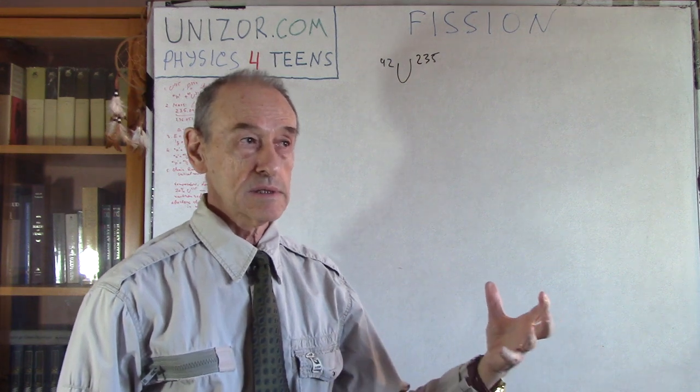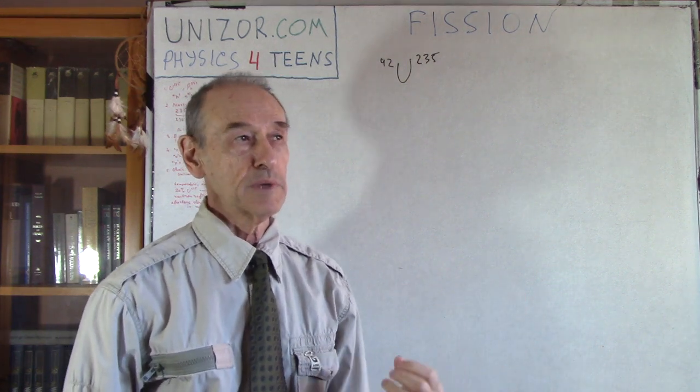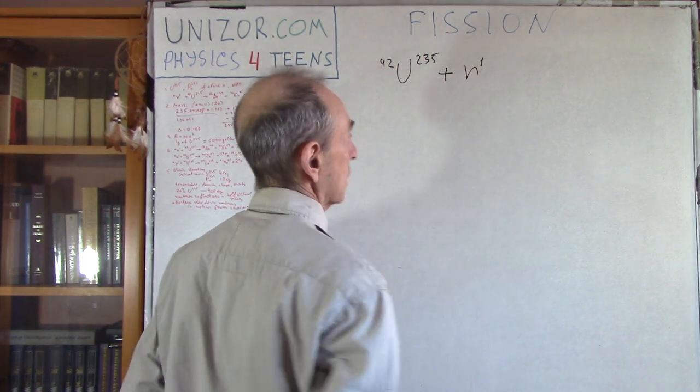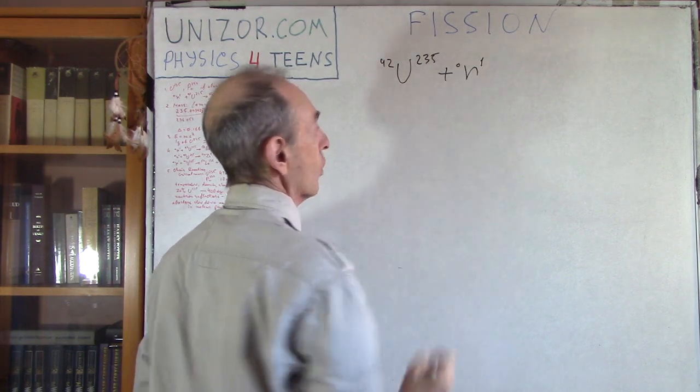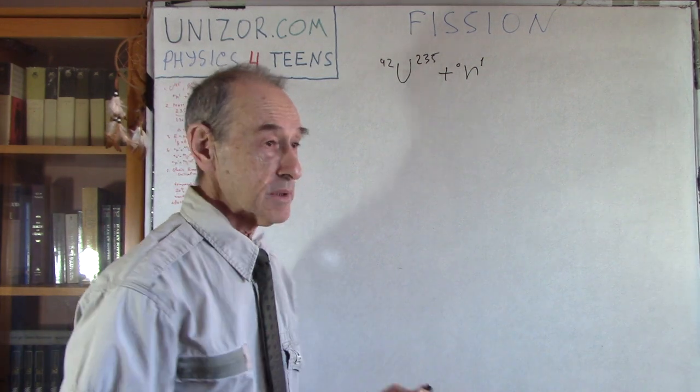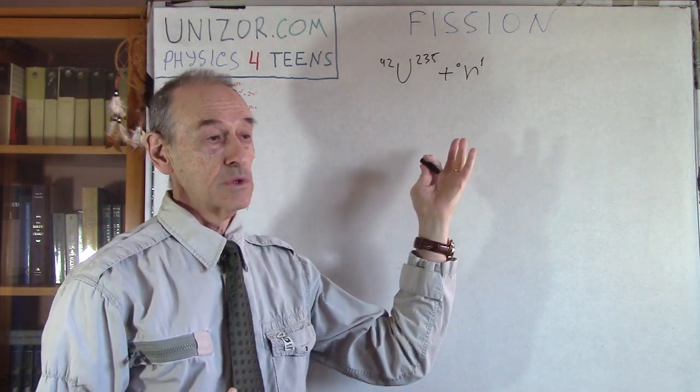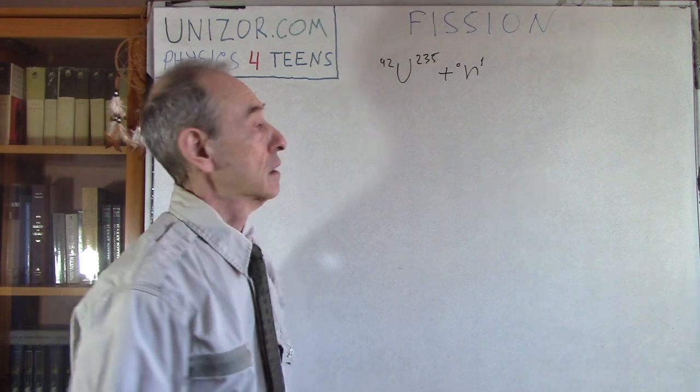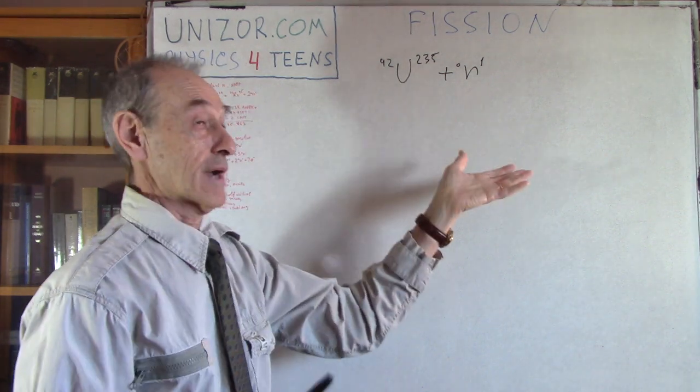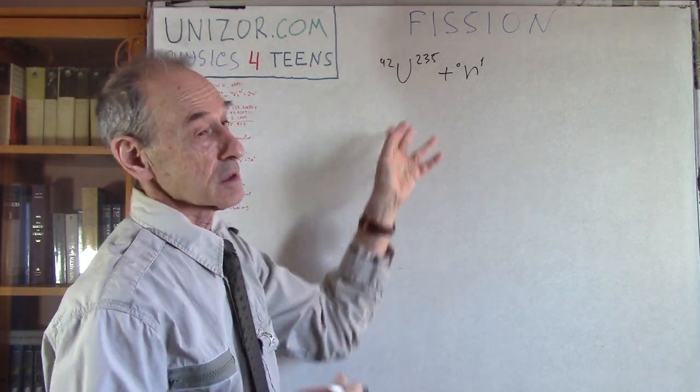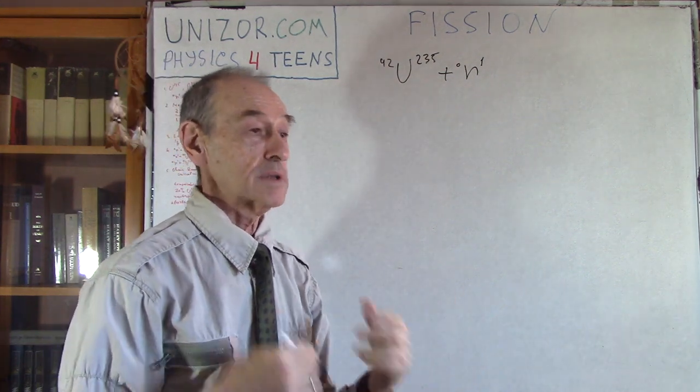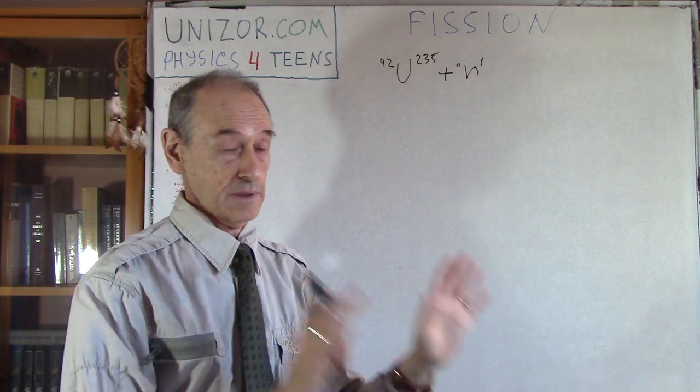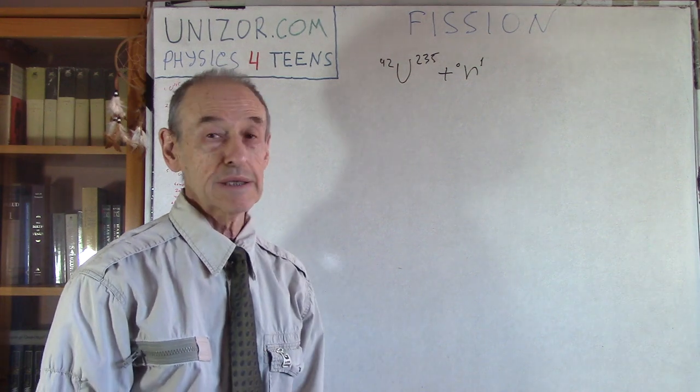If it's bombarded with neutrons, well, bombarded maybe not exactly the right word, if it absorbs a neutron—neutron has atomic number one because it's one particle and zero electric charge—what happens in this particular case, the nucleus of this particular element, if it consumes one neutron, becomes unstable. At the moment of absorption, you can say it's uranium-236 because it adds one to the atomic number, but it's unstable. Uranium-238 is stable, uranium-236 is not. Why? It's a different story, and I don't know really, quite frankly. But anyway, it's unstable and it splits into two halves.